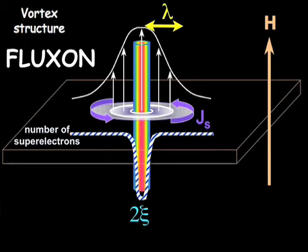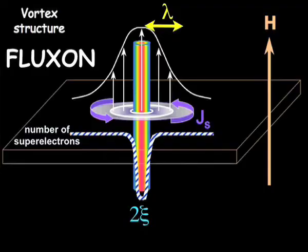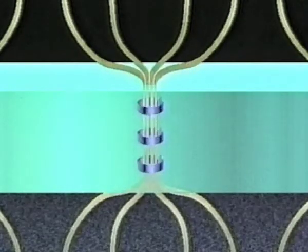The Abrikosov vortex lives inside the bulk of a superconductor. It has a core with this magnetic field which suppresses the superconductivity. At the center of the Abrikosov vortex, with a diameter of about the coherence length, the order parameter is depressed — this core is a normal region — and around the core, within a few times the London penetration depth, we have the screening currents which flow around it.